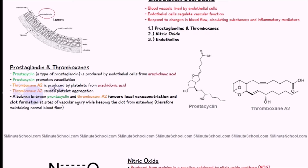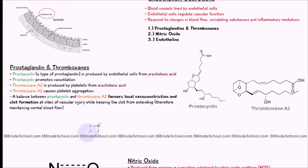Thromboxane A2 is produced by platelets from arachidonic acid as well. Thromboxane A2 causes platelets to clump together, which is usually what happens when there's damage or a tear to the blood vessel wall — it causes the platelets to stick together.